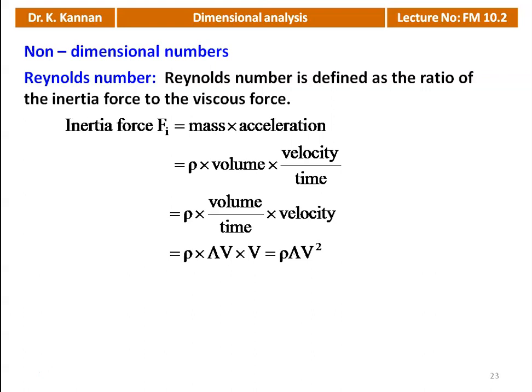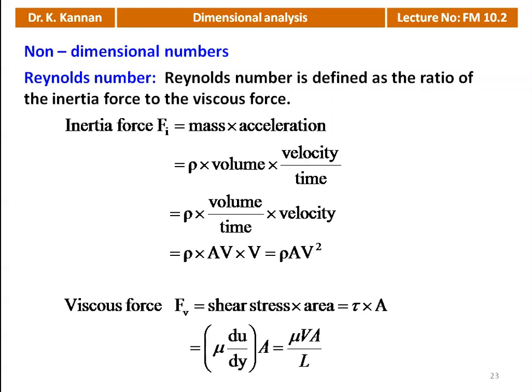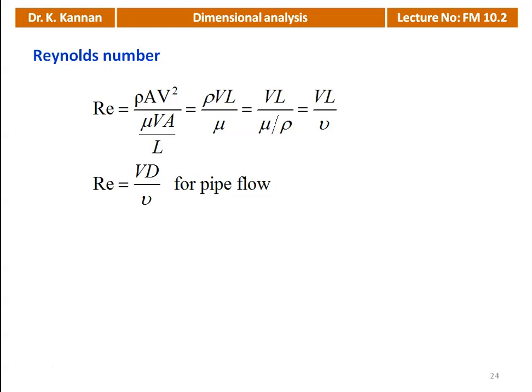Inertia force equals mass times acceleration, where mass = ρ × volume and acceleration = velocity/time. This gives inertia force = ρAV². Viscous force = shear stress × area = τA = μ(du/dy)A = μ(V/L)A. Reynolds number Re = ρAV²/(μVA/L) = ρVL/μ = VL/ν. For pipe flow, Re = Vd/ν, where the length is replaced by diameter d.